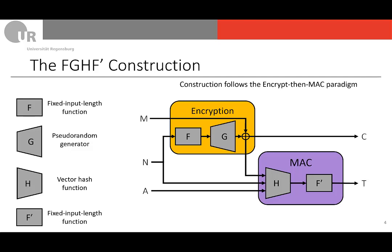The inputs are a message, a nonce, and associated data. The scheme proceeds by taking the nonce, feeding it into function F to derive a pseudorandom output, which is used as the seed for the pseudorandom generator G. The output of G is the key stream that is XORed with the message M to derive the ciphertext C. Subsequently, the ciphertext along with the nonce and associated data are input into hash function H, and the hash value is then fed into function F' to derive the tag T.